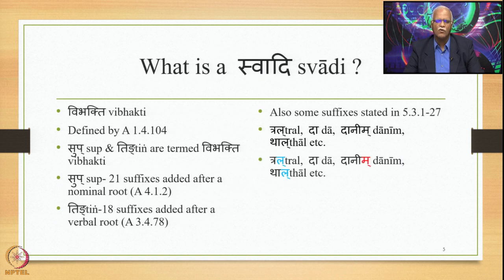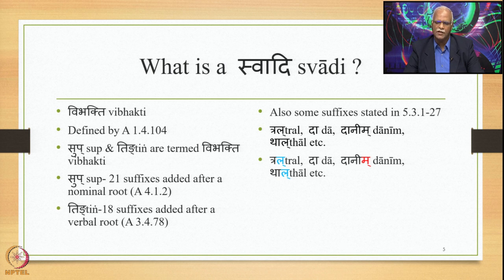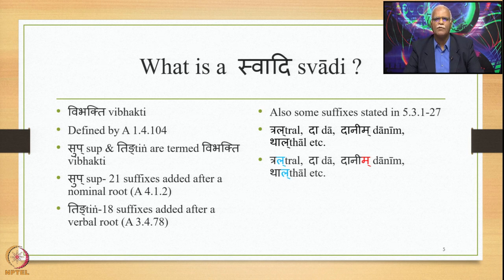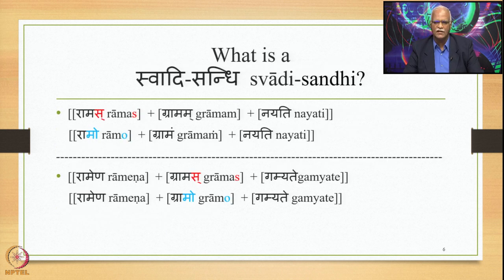We also saw what is a Swadhi. Swadhi refers to Vibhakti. Sutra 1-4-104 defines Vibhakti, namely Sub and Ting. Sub is a set of 21 suffixes added after a nominal root or Pratipadika by Sutra 4-1-2. Ting is a set of 18 suffixes added after a verbal root, also known as Dhatu, as stated by Sutra 3-4-78. They are all referred to as Swadhi. Even though Vibhakti also means some other suffixes in Sutra 5-3-1-2-27, here Sub and Ting are meant.